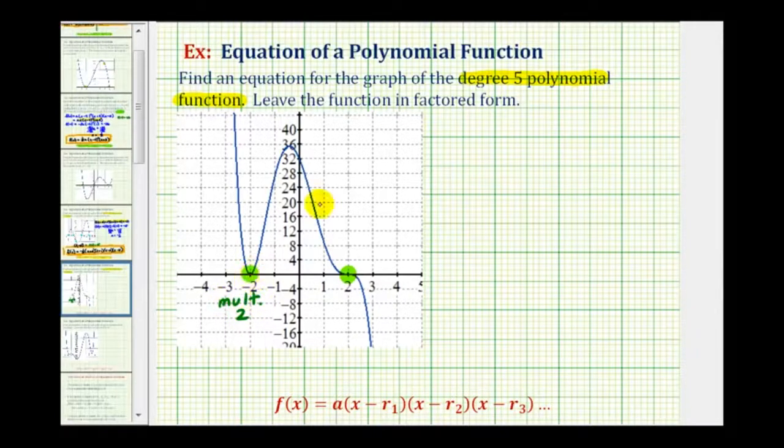It could be four but not six because we know the degree is five. So let's also analyze the zero at positive two. Notice how it crosses the x-axis at positive two which means the multiplicity must be odd.